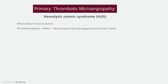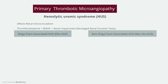The causes of HUS can be categorized into Shiga toxin-associated and non-Shiga toxin-associated hemolytic uremic syndrome. Shiga toxin-associated HUS is also called typical hemolytic uremic syndrome because it is the more common form, accounting for 90–95% of cases. By this convention, non-Shiga toxin-associated HUS is also known as atypical hemolytic uremic syndrome.